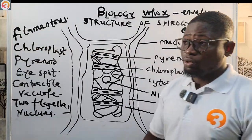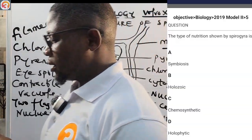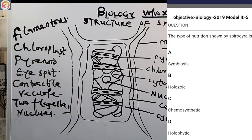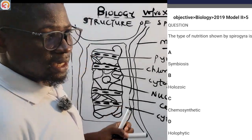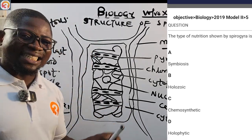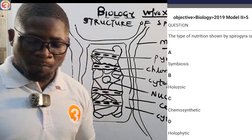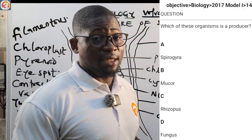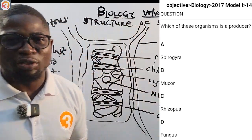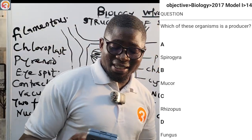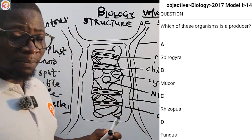Now let's look at the past questions on this topic. Biology 2019 number five: the type of nutrition shown by Spirogyra — A: symbiosis, B: holozoic, C: chemosynthetic, D: holophytic. The correct answer is D, holophytic. Holophytic is a type of autotrophic nutrition whereby organisms manufacture their own food from inorganic materials using energy from the Sun. For 2017 number 14: which of these organisms is a producer? A: Spirogyra, B: Mucor, C: Rhizopus, D: fungus. The correct answer is A, Spirogyra, because it is autotrophic. Mucor, Rhizopus, and fungus are all decomposers, not producers.